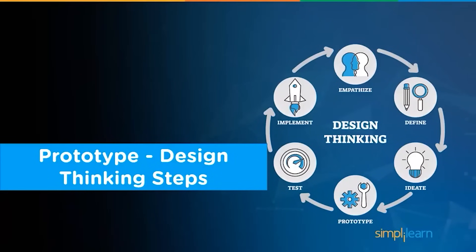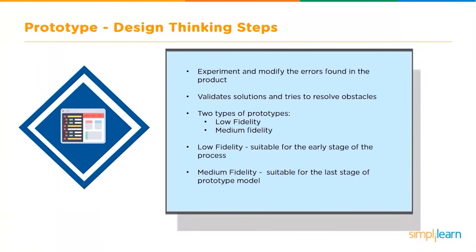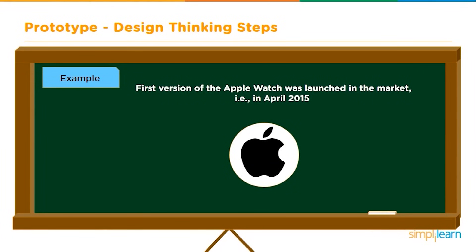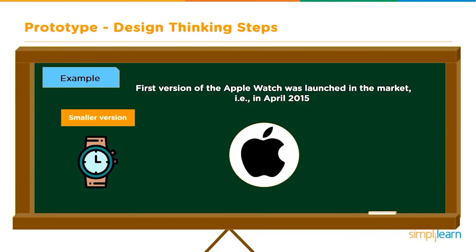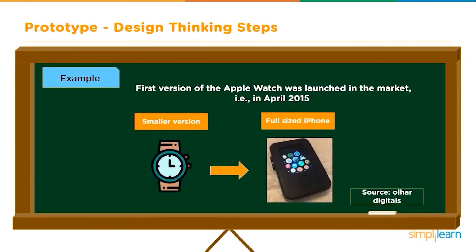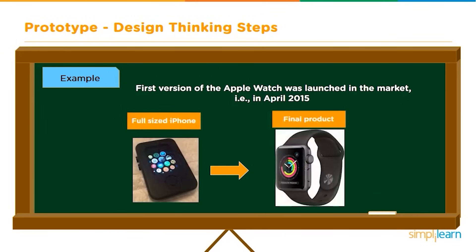In the prototype phase, we experiment and modify errors found in the product. This phase is a mini version of the product that validates solutions and resolves obstacles. There are two types: low fidelity (suitable for early stages) and medium fidelity (suitable for later stages, represented through storyboards). For example, when Apple Watch launched in April 2015, the prototype was actually a full-sized iPhone with a velcro strap attached — the prototype phase gave designers another chance to arrive at the final Apple Watch design.